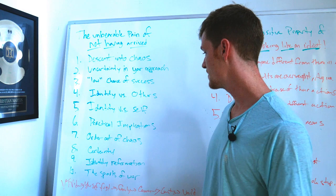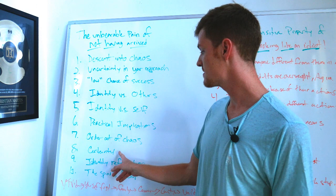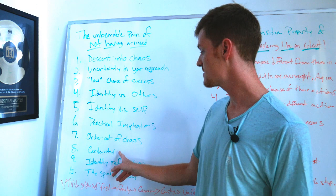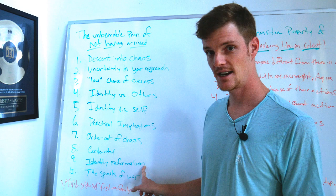Six, the practical implications of not having arrived which are the opposite of what you're trying to achieve. Seven, making order out of chaos. Eight, finally achieving certainty out of uncertainty. Nine, reforming your identity as somebody who's able to create order out of chaos changes the game forever. And ten, the spoils of war.